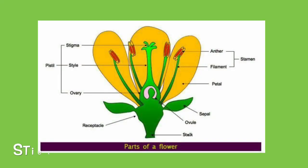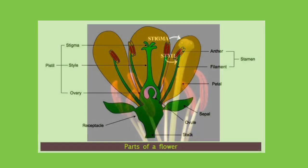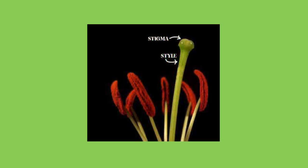The style is another female part of the plant, and if you look at the diagram it's really just holding up the stigma. The reason it sticks out is so that the stigma extends as far as possible, making it more likely to catch pollen.